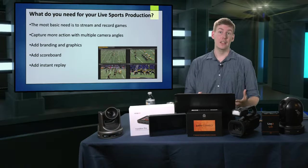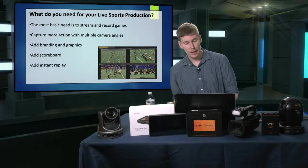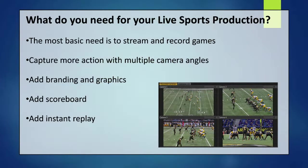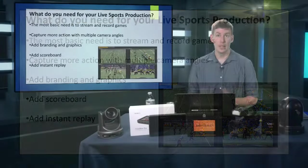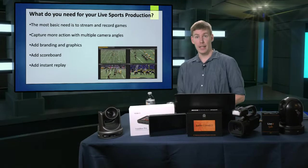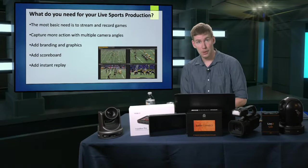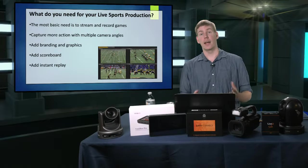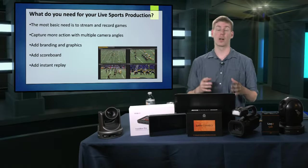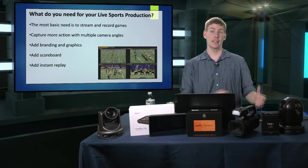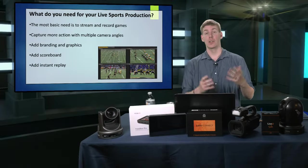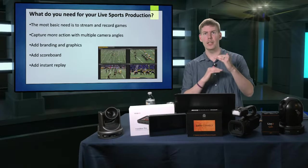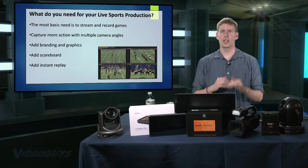So what do you need for your live sports production? First and foremost, you need to be able to stream and record your games. If you want to up the ante a little bit, you can add more cameras for multiple camera angles. Up a little bit more, add some branding and graphics. Up a little bit more, add a scoreboard. And lastly, to be really professional, you're going to want to look into adding instant replay to your productions. We're going to talk about each one of these in a little bit more depth.